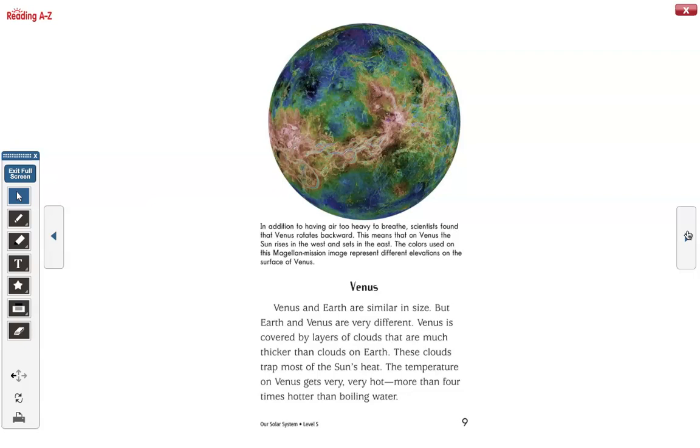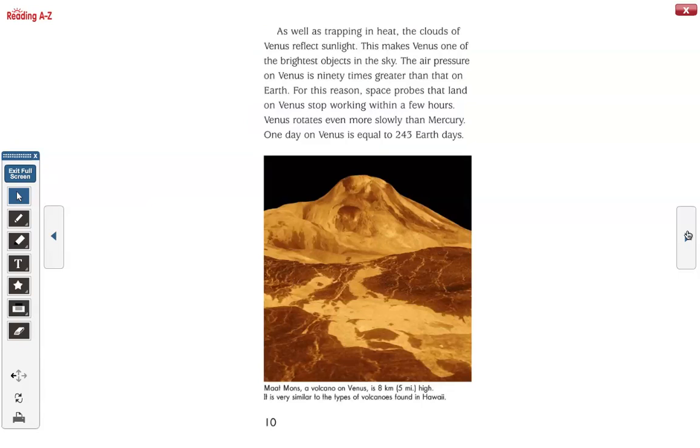Venus and Earth are similar in size, but Earth and Venus are very different. Venus is covered by layers of cloud that are much thicker than clouds on Earth. These clouds trap most of the Sun's heat. The temperature on Venus gets very, very hot. More than four times hotter than boiling water.